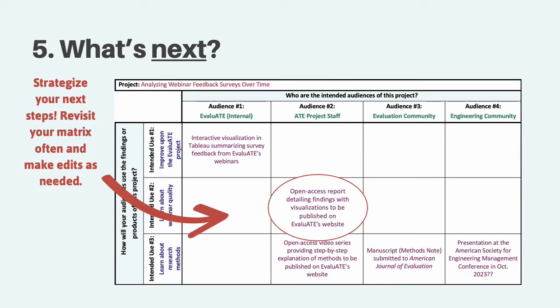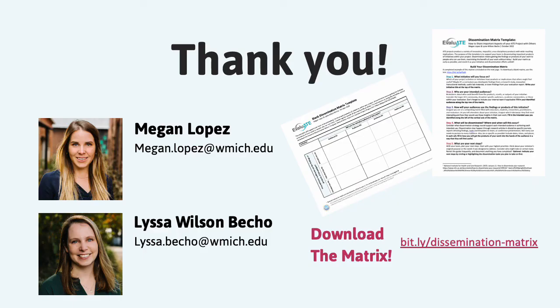Finally, with your team, plan out your next steps. Start with your highest priorities by thinking about the original purpose of your initiative or the needs that it was designed to address. Consider who might take on certain dissemination tasks and what other resources you might need to do so. Remember to revisit this guide frequently and document anything that you've completed. Take a moment to indicate your next steps by circling or highlighting the dissemination tasks that you plan to take on first. We hope that you found this matrix helpful and that it's something you can incorporate into your current and future work. Please be sure to share it with your colleagues and reach out to us for any questions. You can find my contact information as well as Lissa's and the link to download both the fillable matrix and the instruction sheet with a complete example. Thank you again!